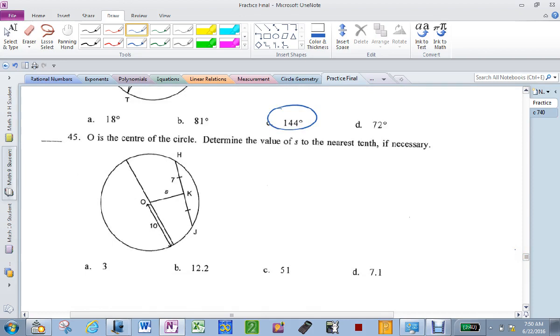O is the center of the circle to determine S. I need this right here. You can see that since this is split, that makes a 90 degree. You know this is 7. You know your radius is 10. So it's 10² minus 7² will equal S². Square root that. That's 100 minus 49. Square root, which is 51 equals S². The square root of 51 is of course 7.1.